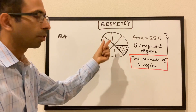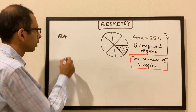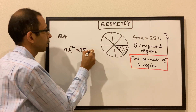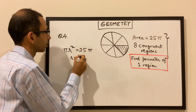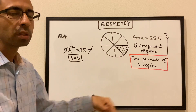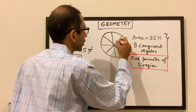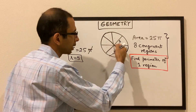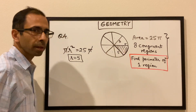The area of the circle is 25π. We know that the area of a circle is given by πr². So πr² equals 25π, which gives us r equals 5. Pi and pi cancel, we take the square root on both sides, we get r equals 5. So the radius is 5, meaning this length is 5 and this length is also 5.